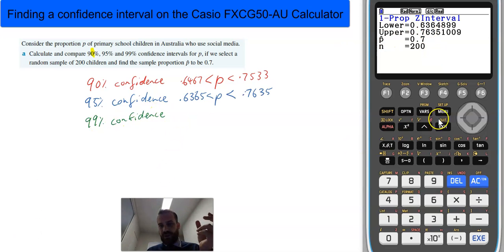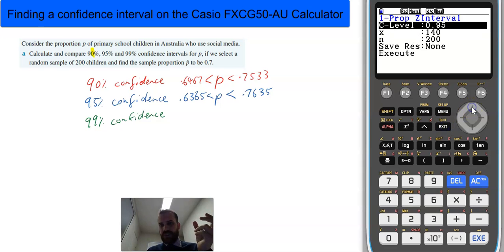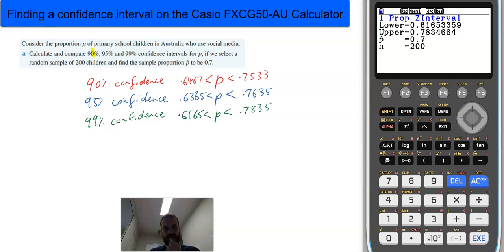And so, that will give me these numbers. And, of course, now I can do my 99% confidence interval just by changing our confidence level there.